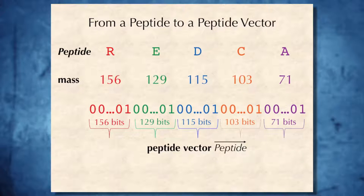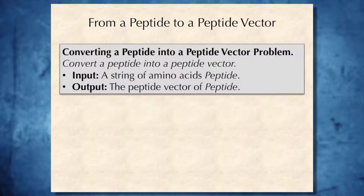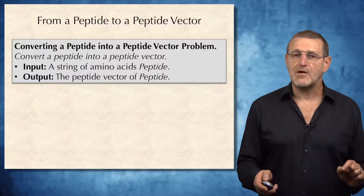To elaborate on the concept of spectral vector, we will first introduce a simpler notion of peptide vector. Given a peptide, we will take each amino acid in this peptide of mass m and represent it as an m-dimensional binary vector, with m-1 zeros in the beginning and the last and single one in the end. Afterwards, we will concatenate all vectors corresponding to individual amino acids into a peptide vector.